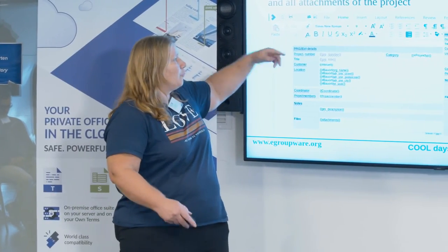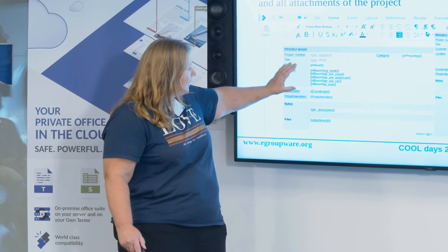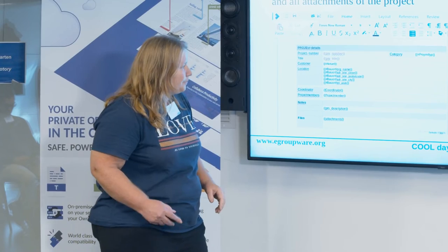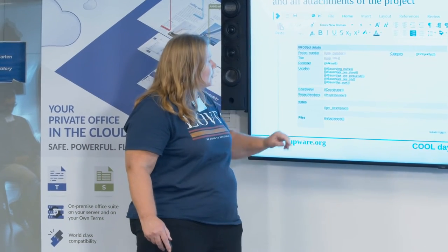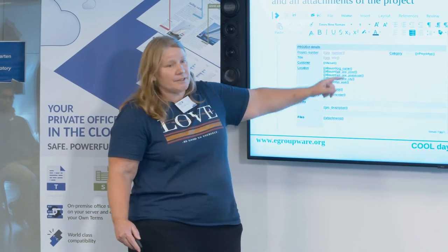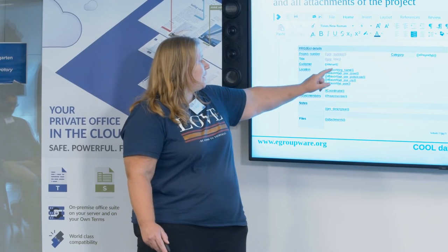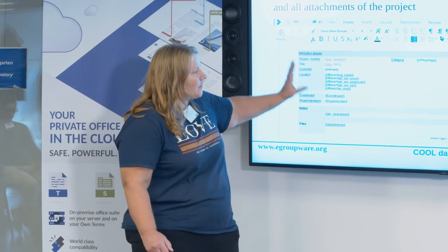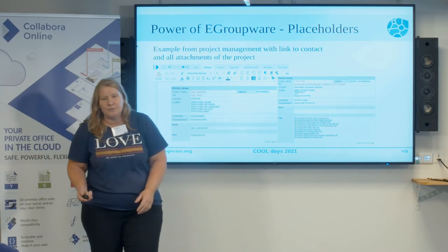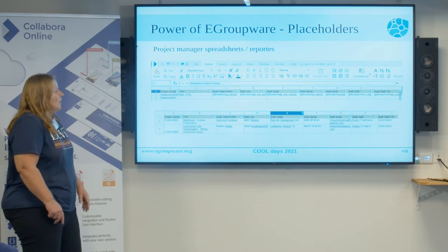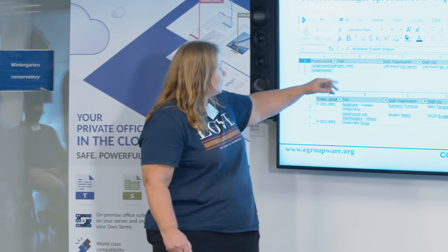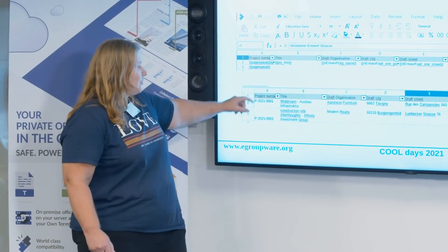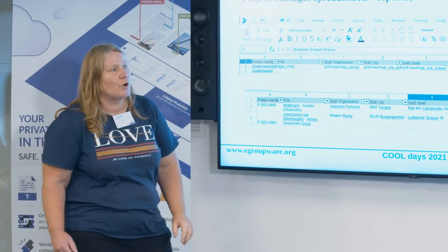Here's an example from the project manager. For project details you need to send out often, you create placeholders — for example a custom field that links to a contact to get the organization name, or a tag that lists all attachments on the project. The same works for spreadsheets: define your templates with a page-repeat tag, so the whole row gets repeated with data; if you select two or three projects they go into different rows.